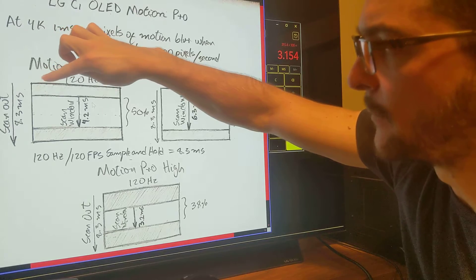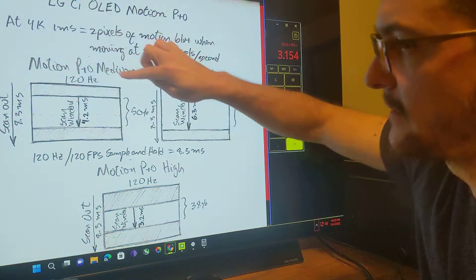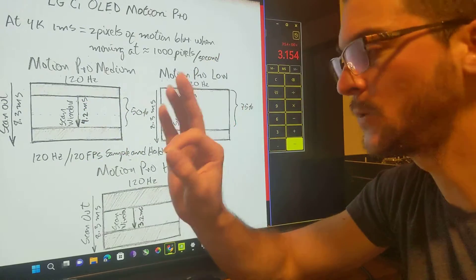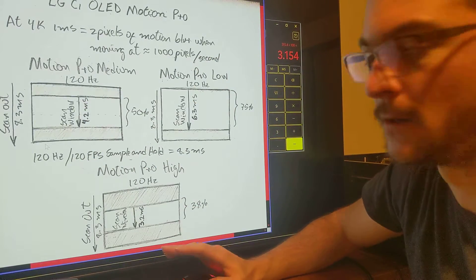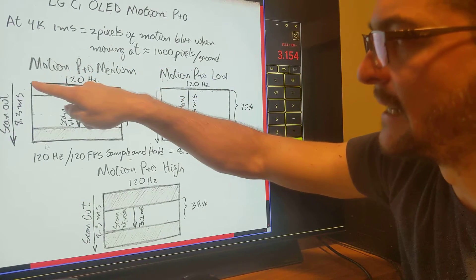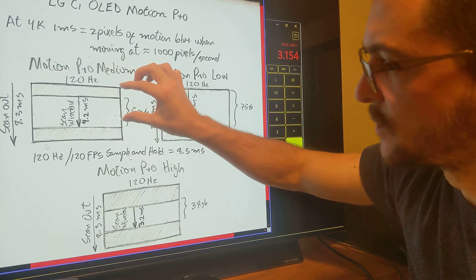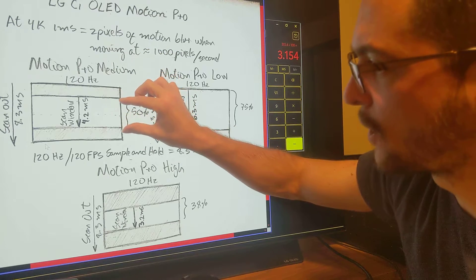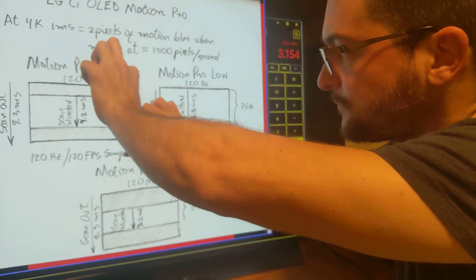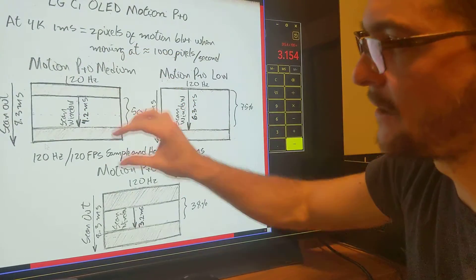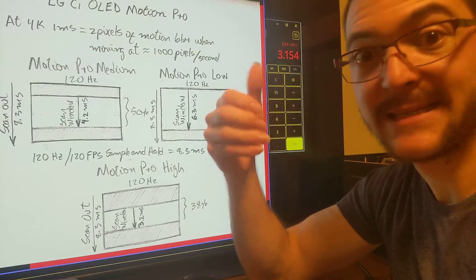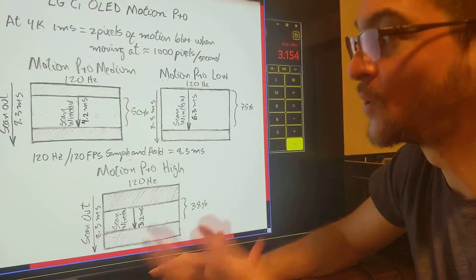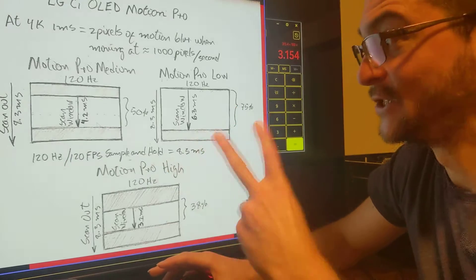The TV draws the picture left to right, top to bottom. In the case of Motion Pro Medium at 120Hz — and this is only for 120Hz, I have to do a separate video for 60Hz — it draws left to right top to bottom, and after it gets to 50% of the screen it keeps scrolling down while the rest is black. So it scrolls down 50% of the picture repeatedly, reducing the pixel visibility time in half and thereby doubling the motion clarity.